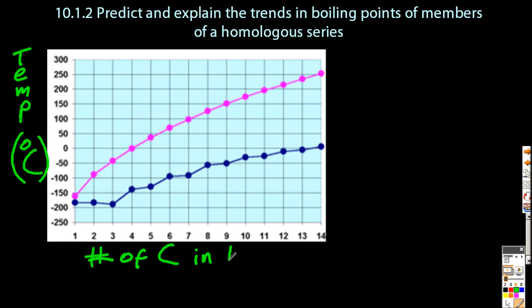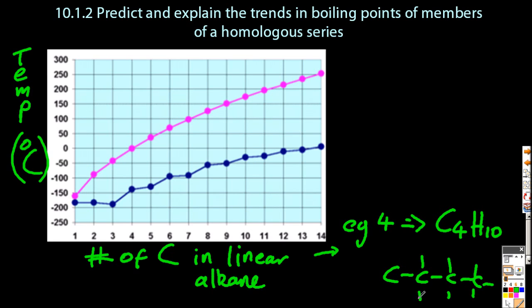Let's spend a little more time on the x-axis. So I'm going to choose 4 on the x-axis. So that would be the 4th alkane, C4H10, which would be butane. Don't forget, the general formula for alkanes is CnH2n plus 2.